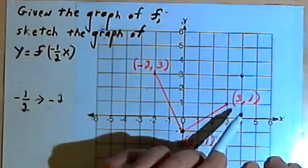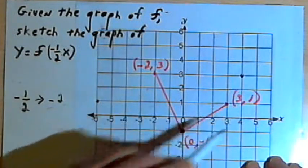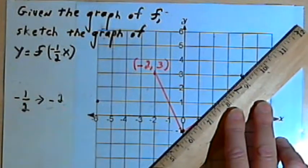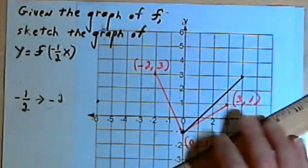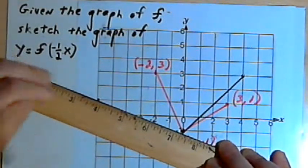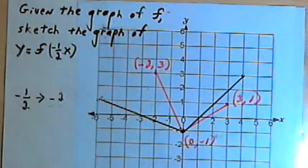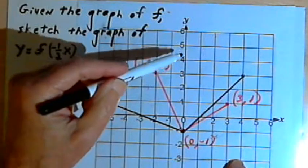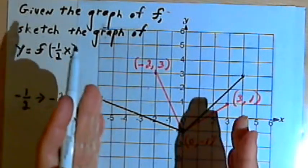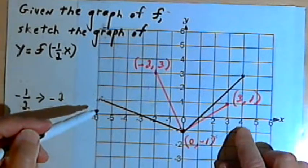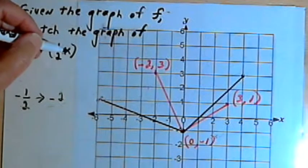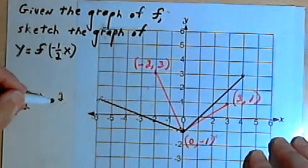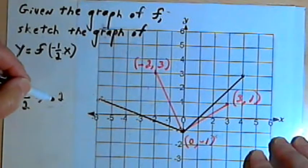(3,1) is going to become (-6,1), because 3 times negative 2 is negative 6. Now let's take a straight edge, connect these points. So what I've got here is the original graph flipped over across the y-axis. It's been reflected across the y-axis, and then it's been stretched out. It's now twice as wide as it was. It was flipped over because we had a negative coefficient of x, and it was stretched out because we had a fraction as a coefficient of x. When we take the reciprocal of that negative fraction, we end up with a number greater than 1, and it's still negative, so it's still flipping it.